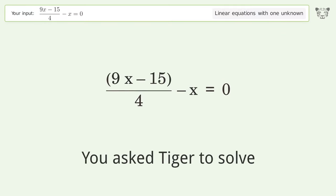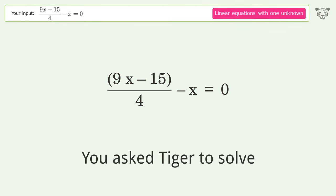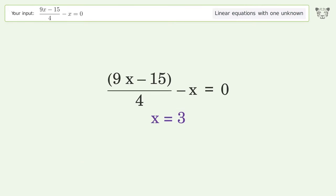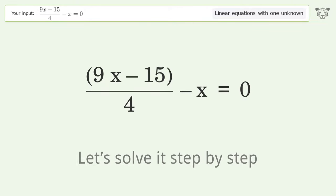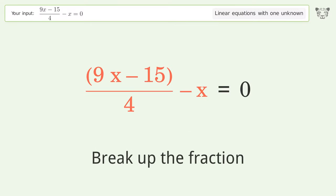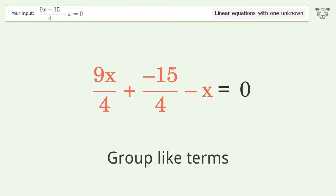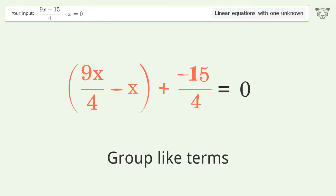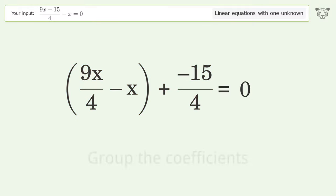You ask Tiger to solve this, which deals with linear equations with one unknown. The final result is x equals 3. Let's solve it step by step. Simplify the expression, break up the fraction, group like terms, group the coefficients.